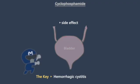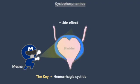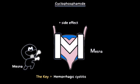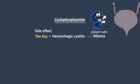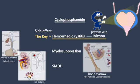Enter mesna. Mesna's shield serves as a protective effect, averting side effects to the bladder. The major side effect is hemorrhagic cystitis, which mesna effectively prevents. Other notable side effects are bone marrow suppression and SIADH.